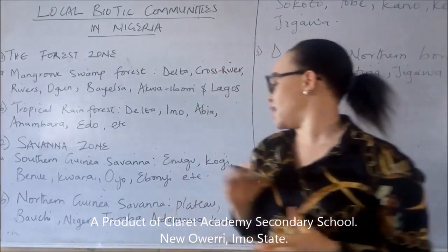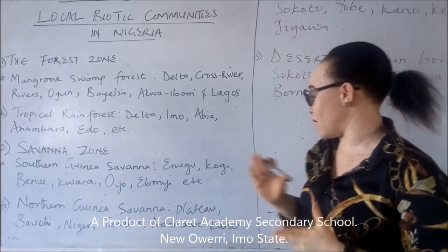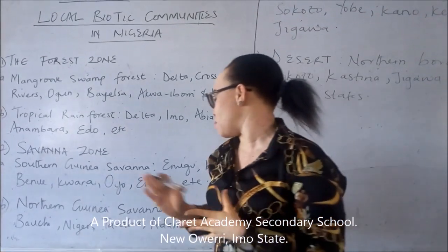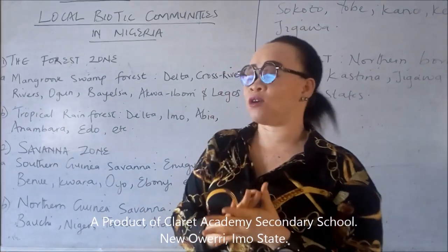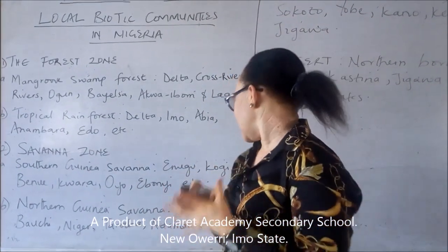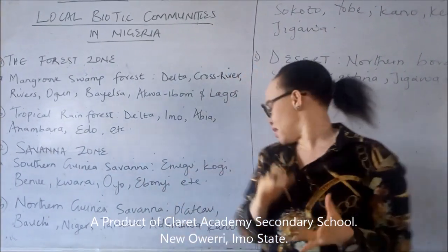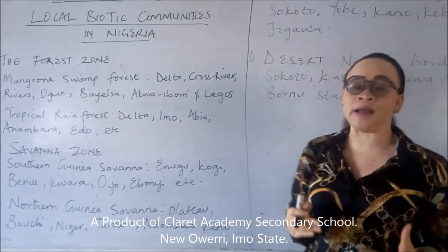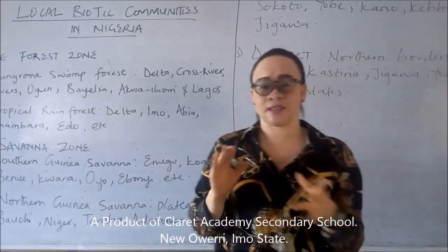Now we have the northern Guinea savannah, which can be found in states like Plateau, Bauchi, Niger, Taraba, Adamawa, Kano states, etc.